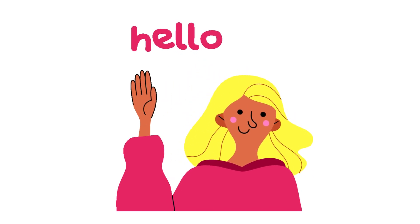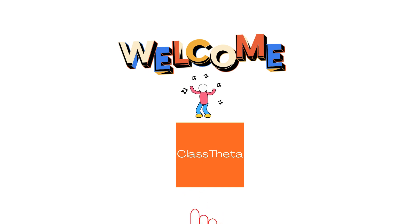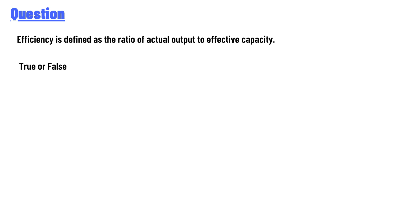Hello everyone, how are you? I am Akrash, your teacher here, and I will teach you different questions and their answers. So I welcome you to ClassTheater.com. Today's question is: Efficiency is defined as the ratio of actual output to effective capacity.